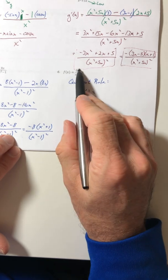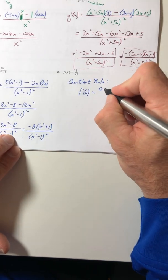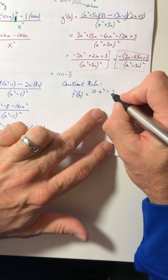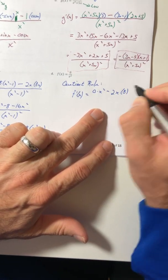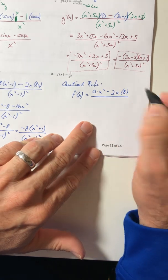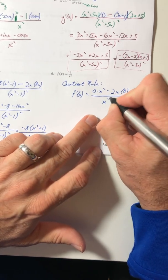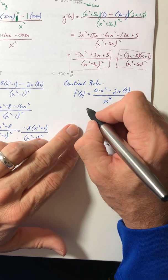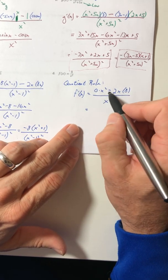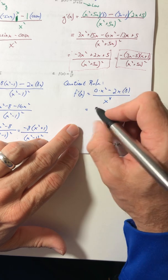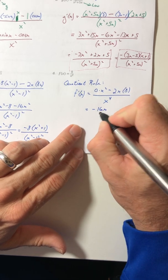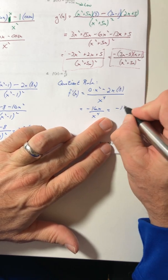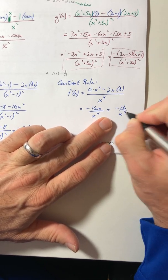So the derivative of the top, which is 0, times the bottom minus the derivative of the bottom times the top, all over the denominator squared, so x to the fourth. So let's simplify that out. Well, anything times 0 is 0, so that's gone. So negative 16x all over x to the fourth. Simplify into negative 16 all over x to the third. Okay, so that totally worked.